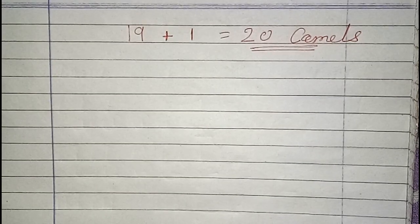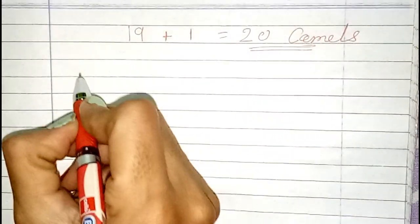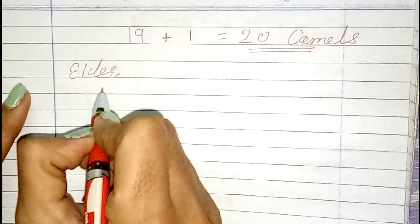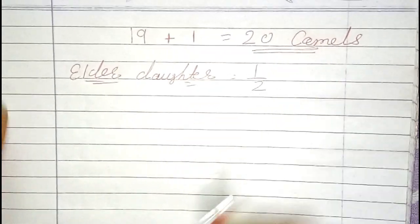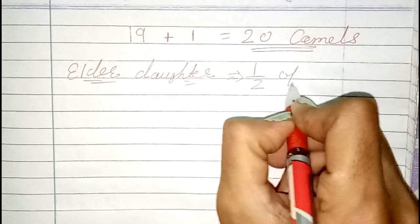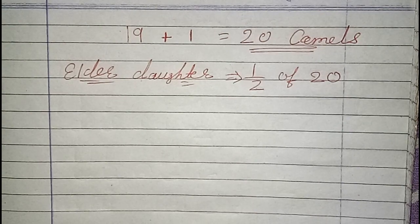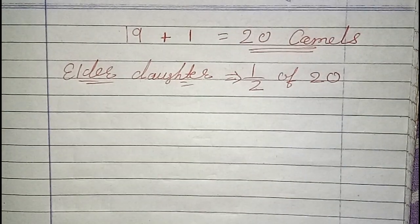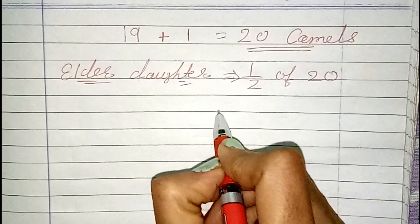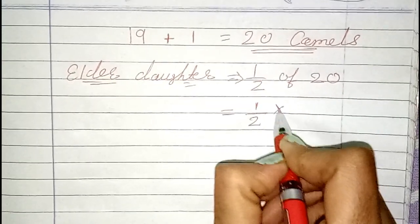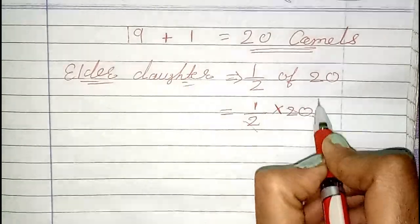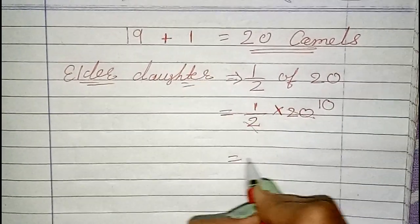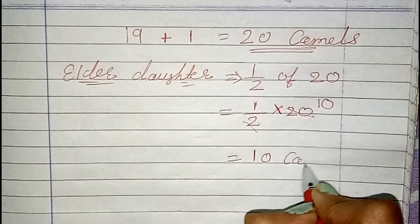Now they have 20 camels. The eldest daughter will get half. Half of 20 — that means 1/2 of 20, which is multiply by 20. In the 2 times table: 2 tens are 20, and 10 ones are 10. So the elder daughter will get 10 camels.